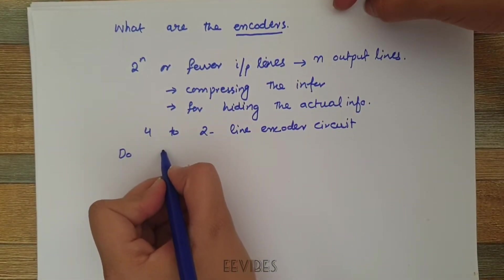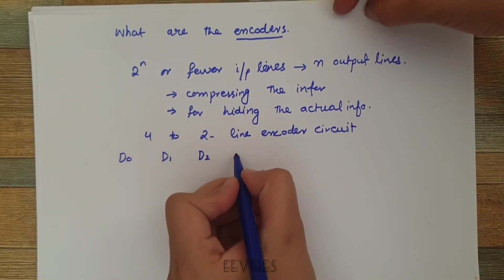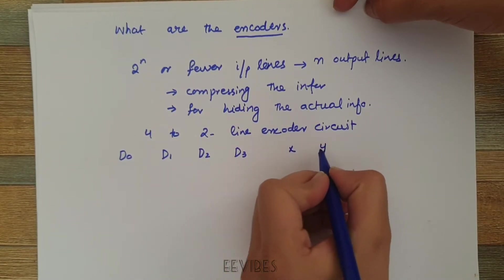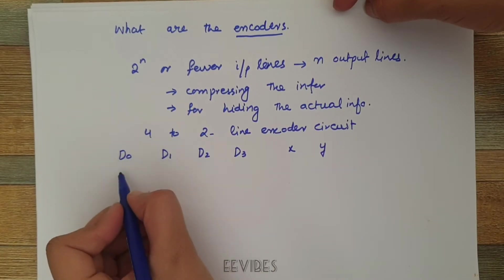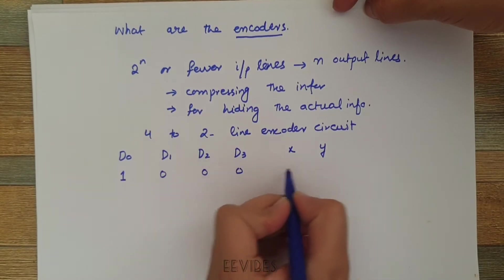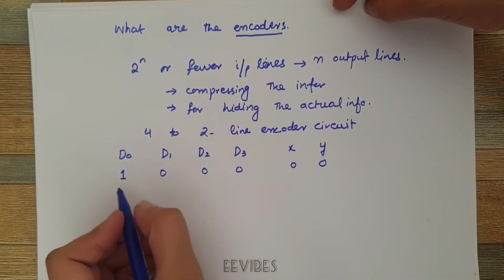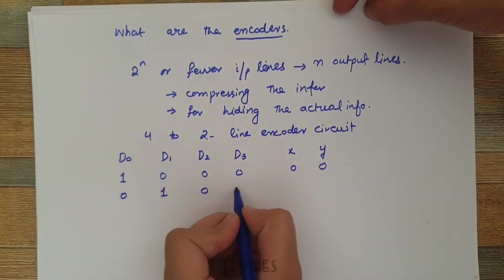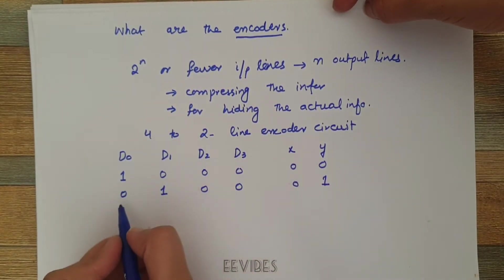On the input side you will have 4 input lines D0, D1, D2, and D3, and on the output side you can have 2 variables x and y. Then only one input line can have the value equal to 1 and rest of the input lines will be equal to 0. This will generate the output code equal to 0, 0. Similarly, you will select the next input value equal to 1 and corresponding to that the code will be 0, 1.